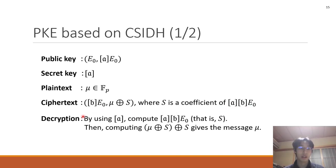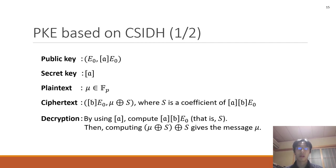And in decryption, by using R, we compute R*(B*E0), so we get S. Then computing μ XOR S XOR S gives the message μ. This is a PKE based on CSIDH. It is very similar to ElGamal encryption. But there are differences between this PKE and ElGamal encryption.